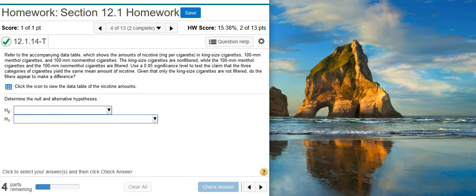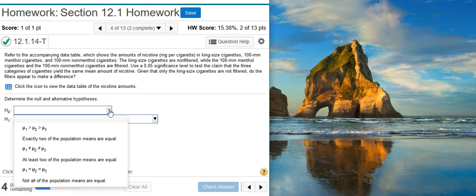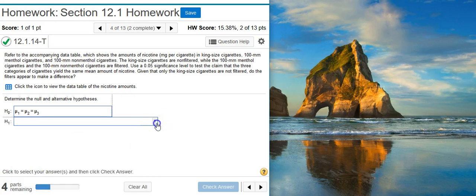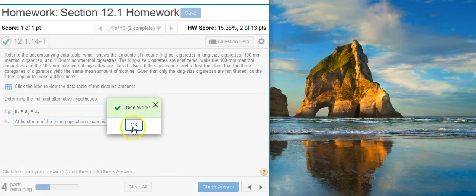Okay, the first part of this problem is asking us to determine the null and alternative hypotheses. With One-Way ANOVA, this is pretty much set in stone. The null hypothesis will always be that all of your population parameters are equal, and the alternative hypothesis will be that at least one of those parameters is different from the others. So I'm going to select those here in the drop-down menus for each of these hypotheses. Nice work!